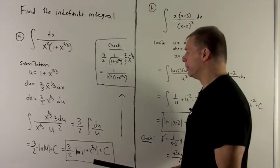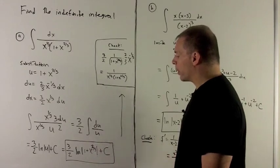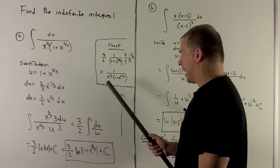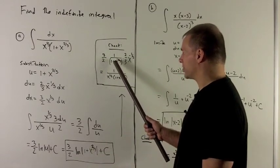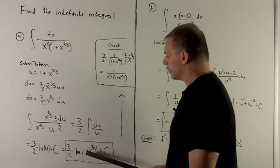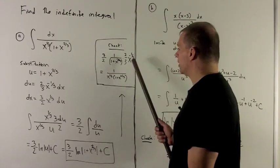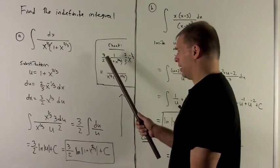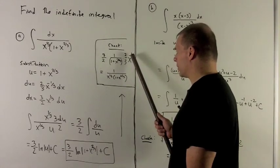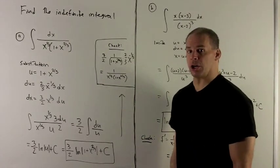Let's check this, as usual. If I take the derivative, the derivative of natural log of whatever is 1 over whatever times the derivative of whatever. So I get 1 over 1 plus x to the 2/3 in the bottom, multiplied by the derivative of the inside: the 1 goes away, 2/3 comes down, subtract 1 gives minus 1/3 in the exponent. The 3/2 cancels with 2/3, and x to the minus 1/3 in the bottom removes the minus sign, leaving the original integrand. So our check works out.